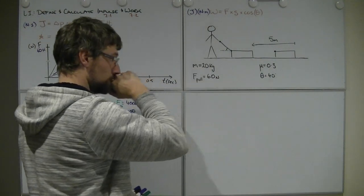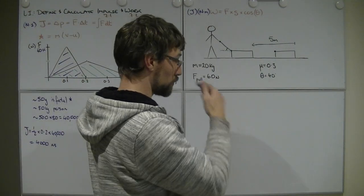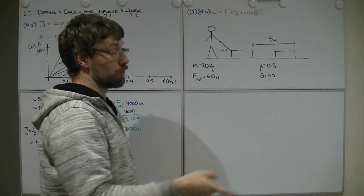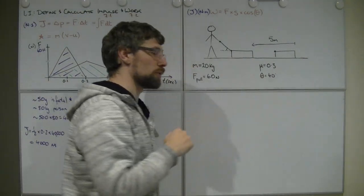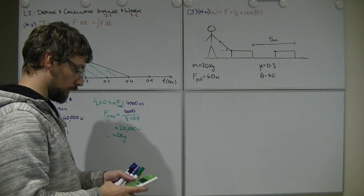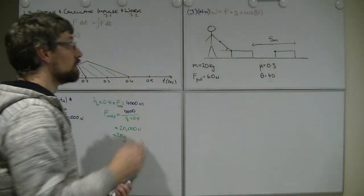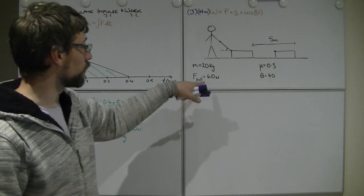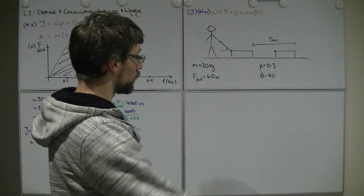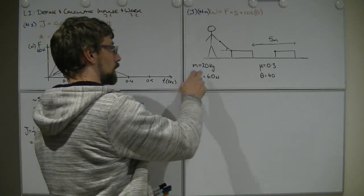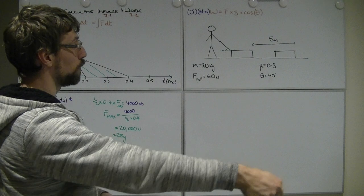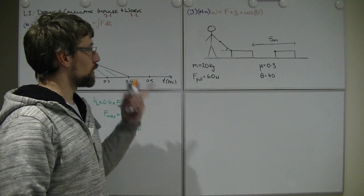I've got little Timmy here, pulling along his wagon. The wheels have fallen off, and it's just a box, essentially. We'll say it's a wooden box, pulling along the carpet. That took me forever to find data for it, but it's roughly a coefficient of friction of 0.3. Little Timmy's going to pull on this thing with a force of 60 newtons. However, little Timmy is not so bright, and he's going to be pulling it at an angle of 40 degrees. The mass of this object is 20 kilograms. He's going to pull it 5 meters. What I want to know is how much work is he doing?